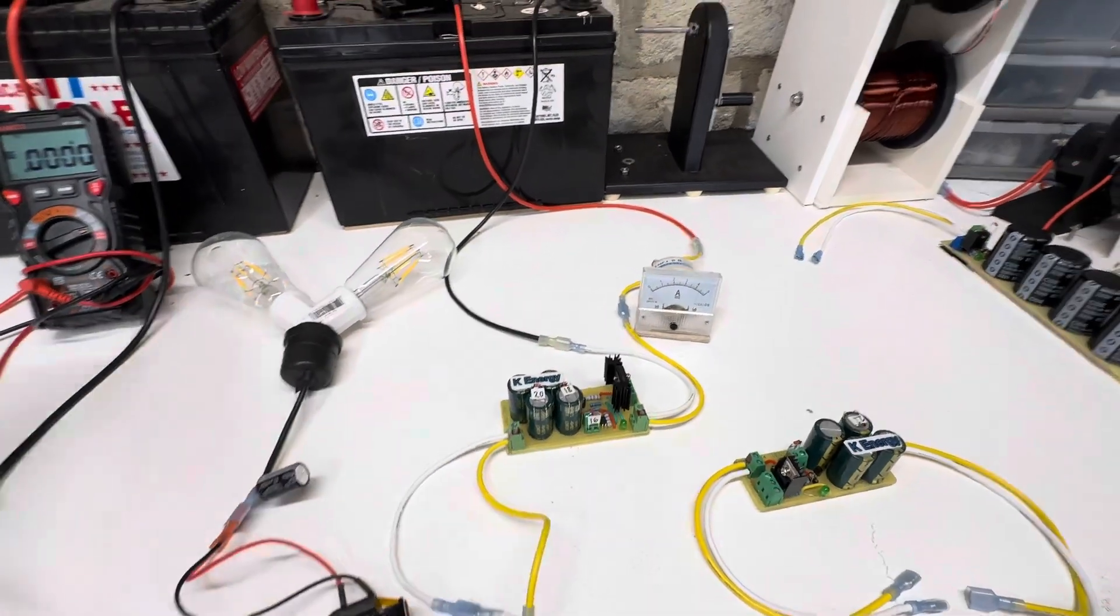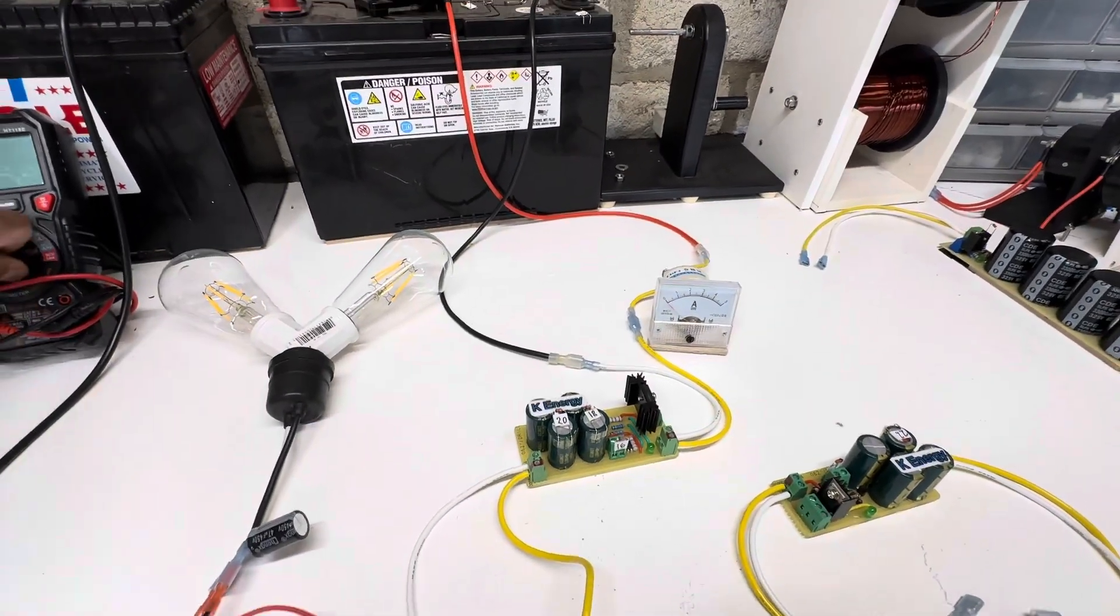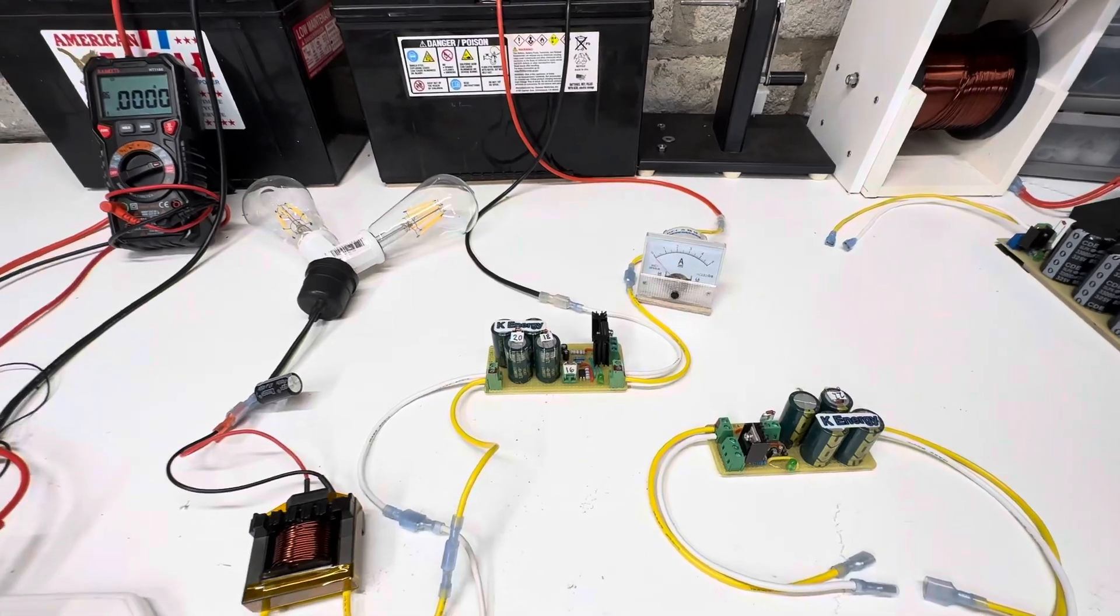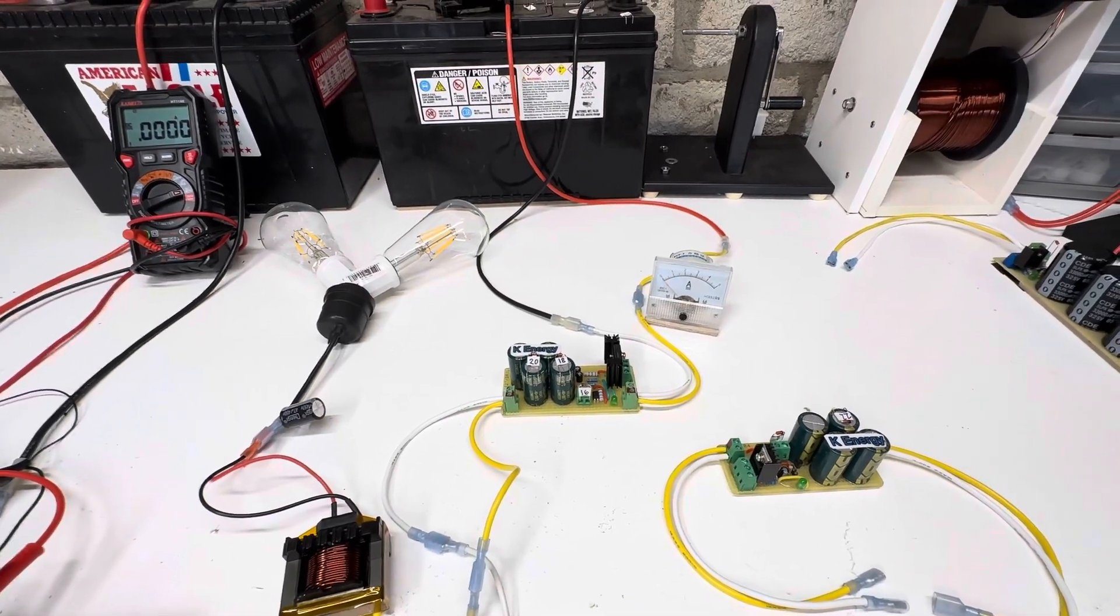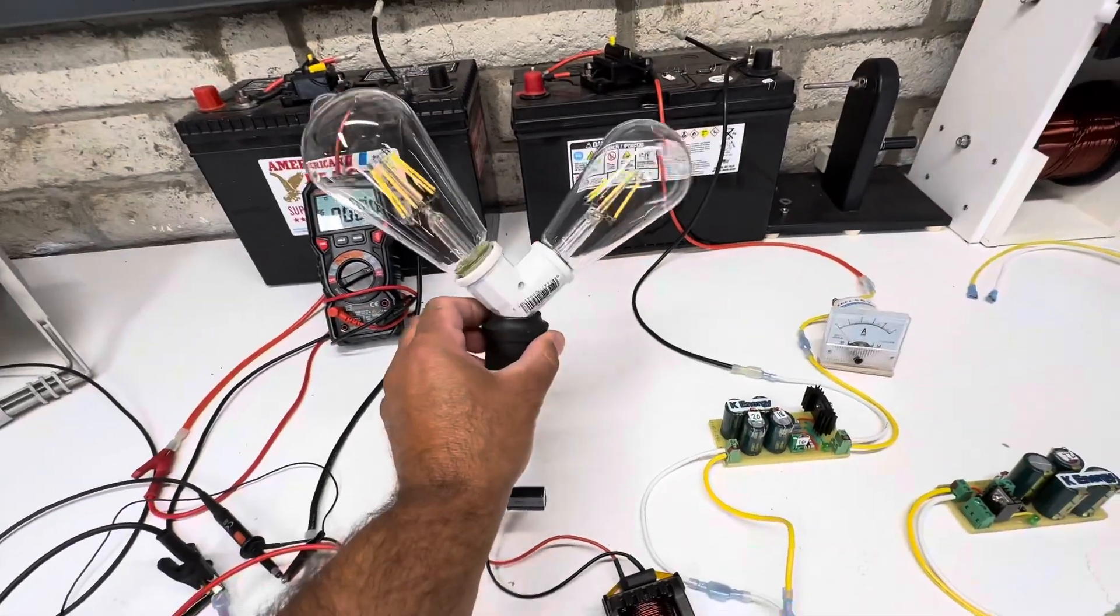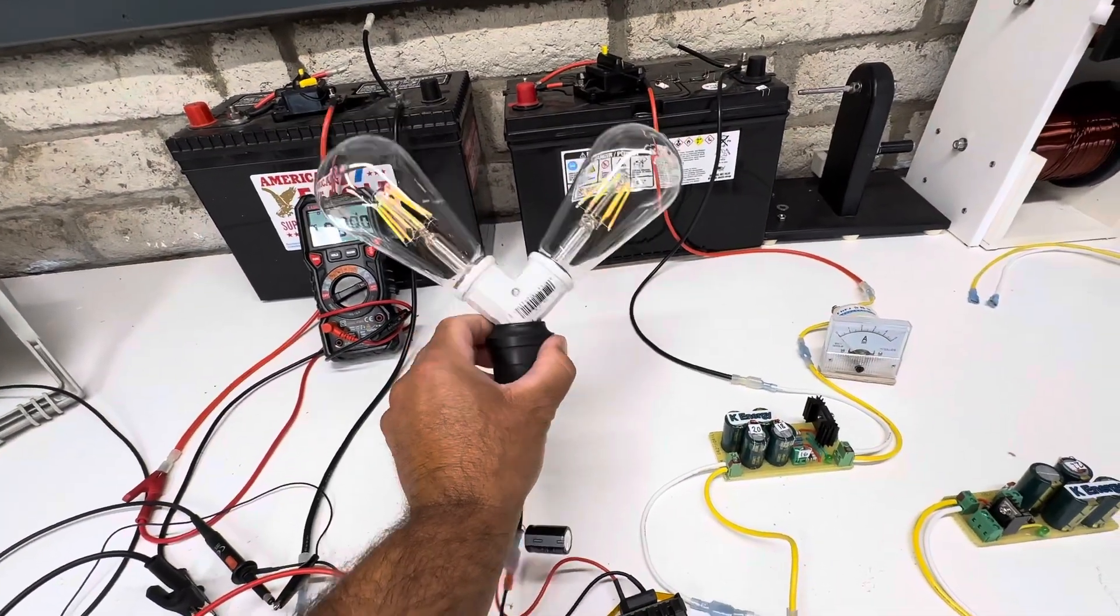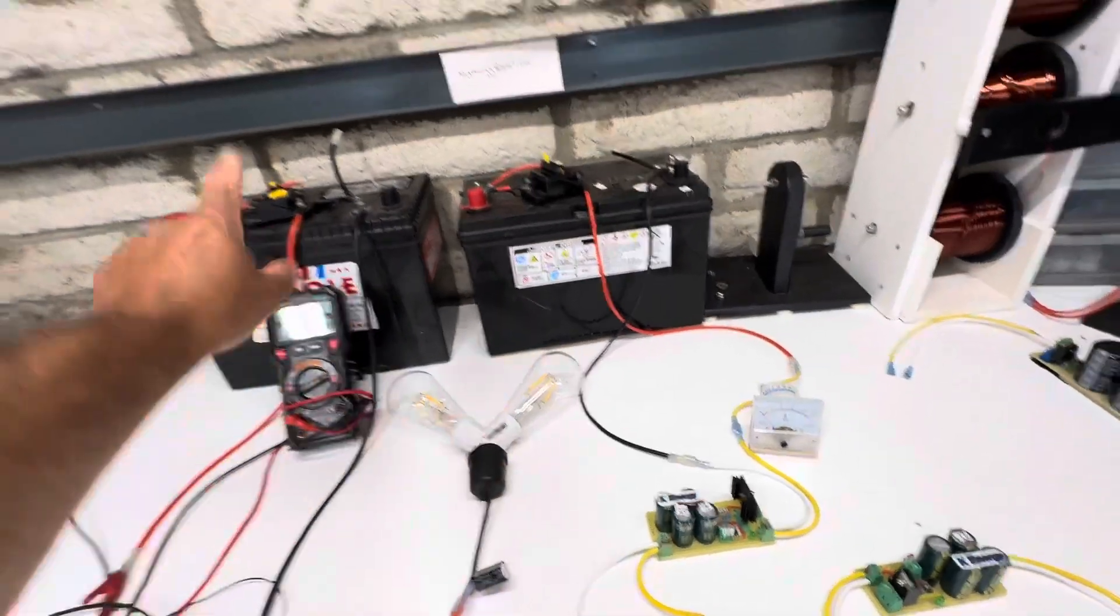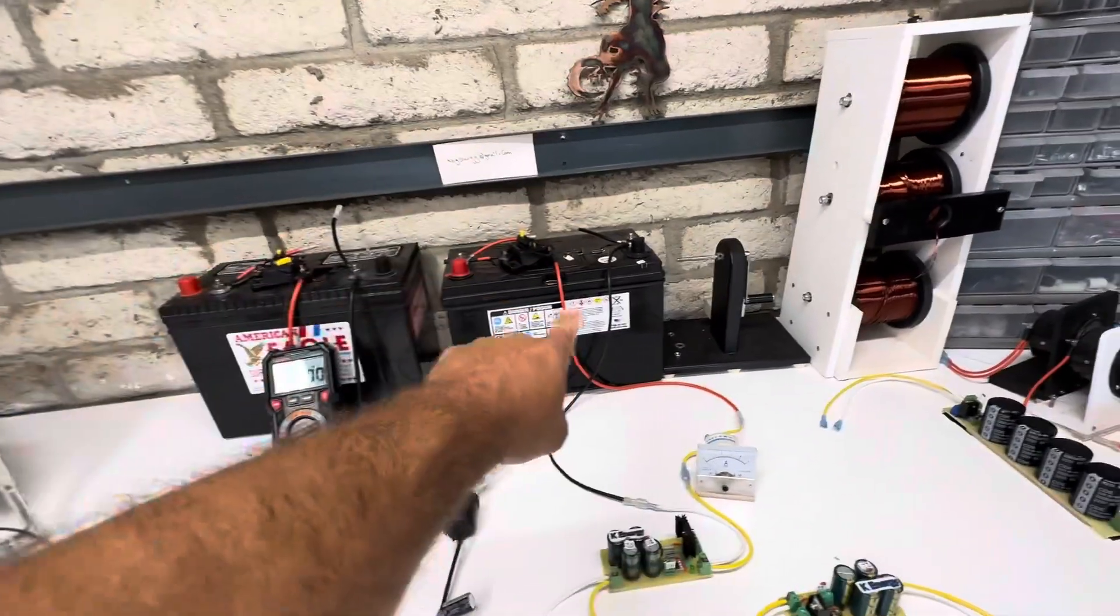It's set up for 16 volts, so it pulses at about 16 and a half volts at about 2 to 2 and a half amps. These light bulbs are 6 watt, 12 to 24 volt LEDs, and then we just have the 12 volt battery running and 12 volt battery charging.